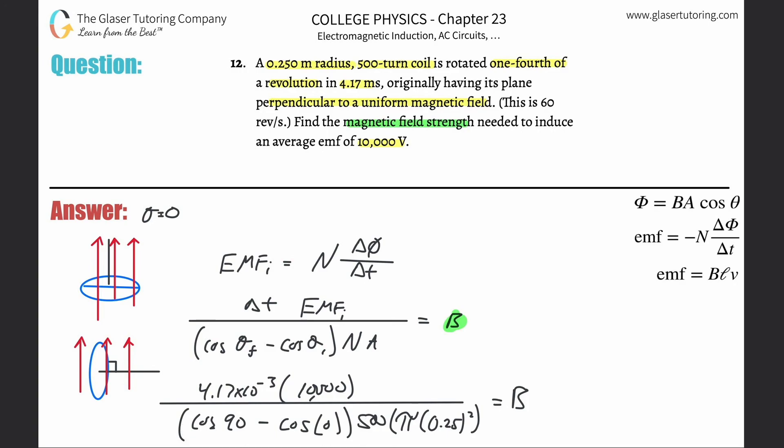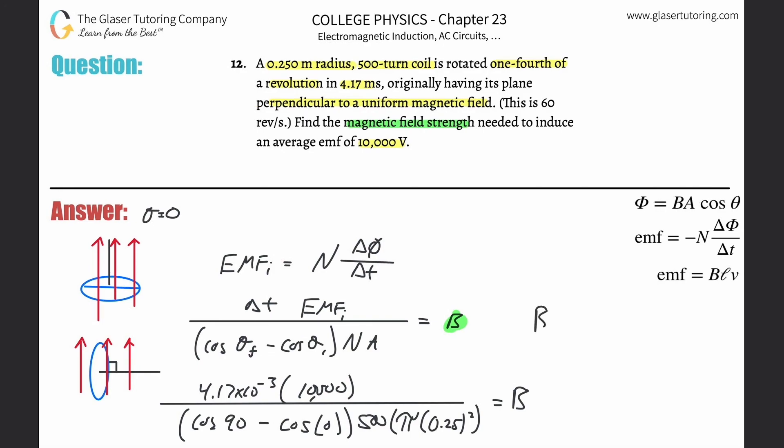So this is 4.17 times 10 to the minus 3 times 10,000 divided by - that's just going to work out to be basically negative 1 on the inside there with the cosine but it's 1, we're just taking absolute values. So then divided by 500 times pi times 0.025 squared. The magnetic field should be 0.425 or so and that's in terms of tesla.